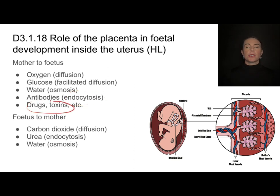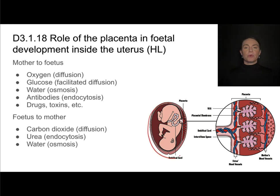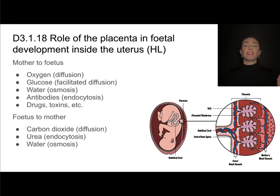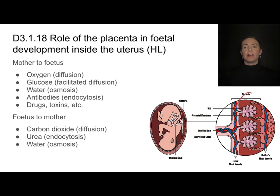Unfortunately, drugs and other toxins can also pass from the mother to the fetus through the placenta. The fetus also needs to move waste products into the mother's blood supply, since it cannot excrete things beyond the womb. This includes carbon dioxide, which moves from fetus to mother via diffusion, and urea — a byproduct of protein digestion — which moves via exocytosis out of fetal cells and endocytosis into the mother's cells. Any necessary water exchange also takes place here.